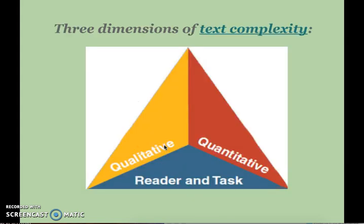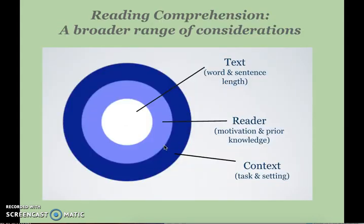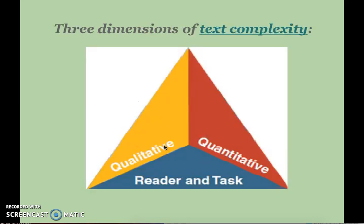Going into the three dimensions of text complexity, they attempt to address those three different layers of comprehension. The three dimensions are the qualitative elements, the quantitative elements, and the reader and task elements. We're going to go through each of those individually now.